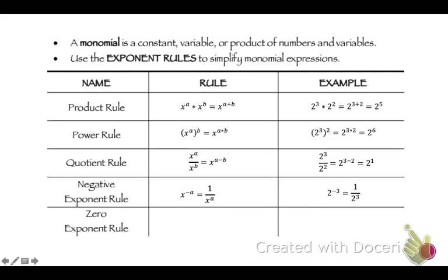An example: 2 to the negative 3rd power is 1 over 2 to the 3rd power. Then the zero exponent rule — this one's easy, please remember it. x to the 0 power is 1. Anything raised to the 0 power is 1. For example, 2 to the 0 power equals 1, 1,000 to the 0 power equals 1, 1,495 to the 0 power equals 1. Anything to the 0 power equals 1.